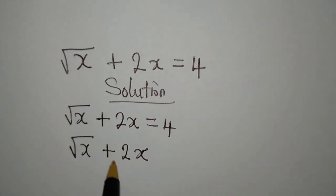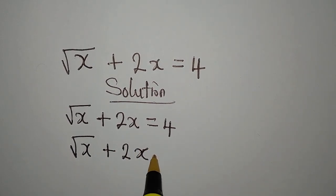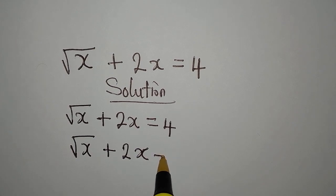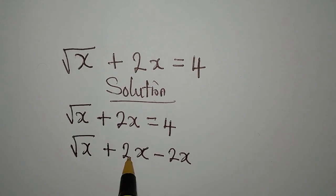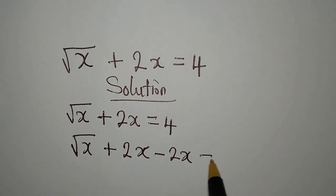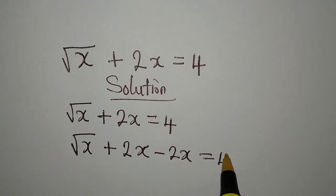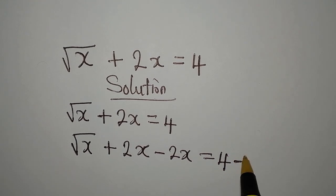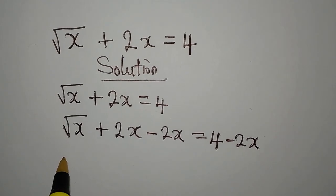To make square root of x the subject, I have to remove this 2x, and to do that I have to subtract 2x from both sides of the equation. So I have square root of x equals 4 minus 2x.